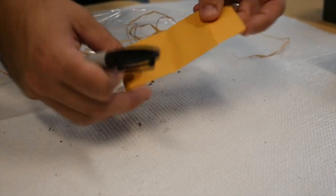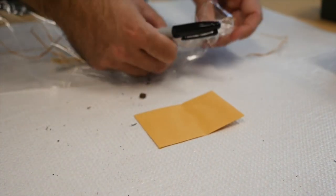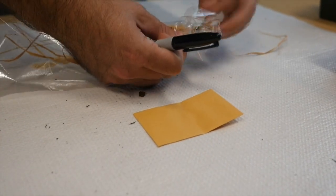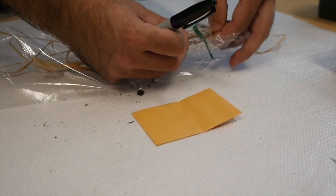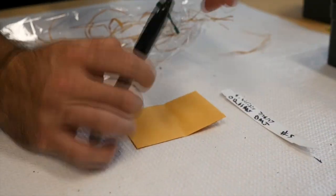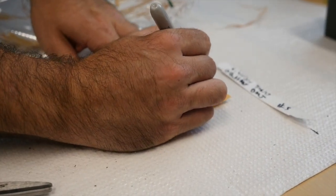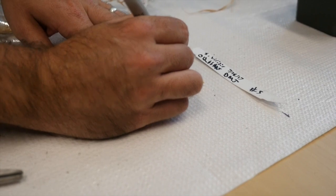So after you've collected your seeds into a clean coin envelope, what you want to do is grab the tag, lay it out, and then just transcribe all the information onto the coin envelope.